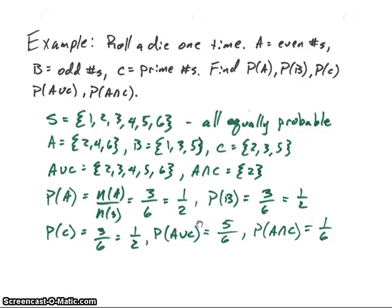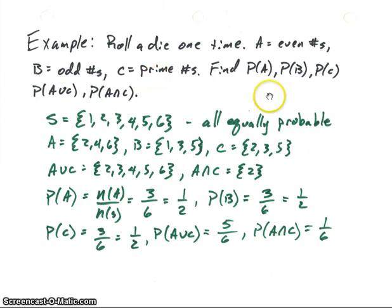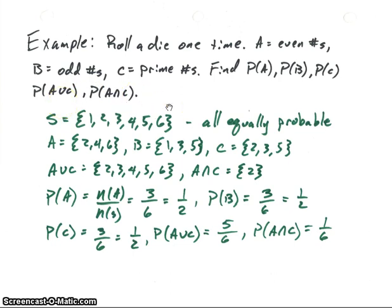Let's look at a simple example that everyone's probably familiar with. We roll a die one time. Suppose that event A is the even numbers, B is the odd numbers, and C is the prime numbers. Let's find the probability of A, probability of B, probability of C, probability of A union C, and probability of A intersect C.